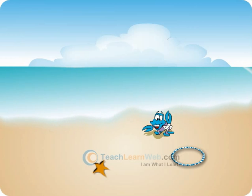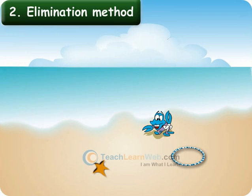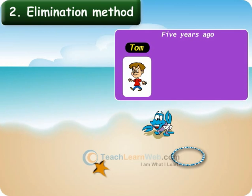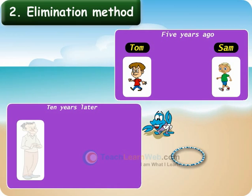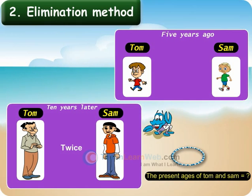Now, children, let us learn the second method, i.e. the elimination method, with the help of an illustration. Five years ago, Tom was thrice as old as Sam. Ten years later, Tom will be twice as old as Sam. Can you tell the present ages of Tom and Sam?